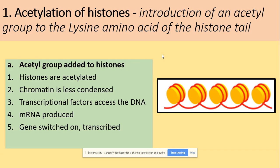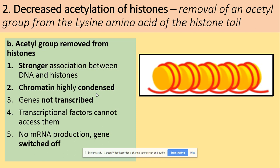Acetylation is the addition of an acetyl group to histones — specifically to the lysine amino acid of the histone. This makes the gene active: the chromatin is less condensed, mRNA is produced, and the gene is on. Decreased acetylation — removal of the acetyl group from the lysine amino acid — makes the complex more condensed. In this situation the gene is not available, there is a strong association, no mRNA is produced, and the gene is off.